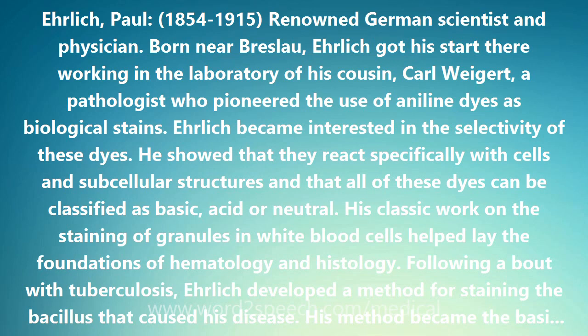Ehrlich looked for chemical agents to use against disease. His research programs were guided in part by his theory that the germicidal capability of a molecule depended on its structure, particularly its side chains, which could bind to the disease-causing organism. Ehrlich was in search of what he called the silver bullet. The most successful products of this quest were salvarsan, 1909–1910, and neosalvarsan, 1912, the most effective drugs for treating syphilis until the advent of antibiotics.